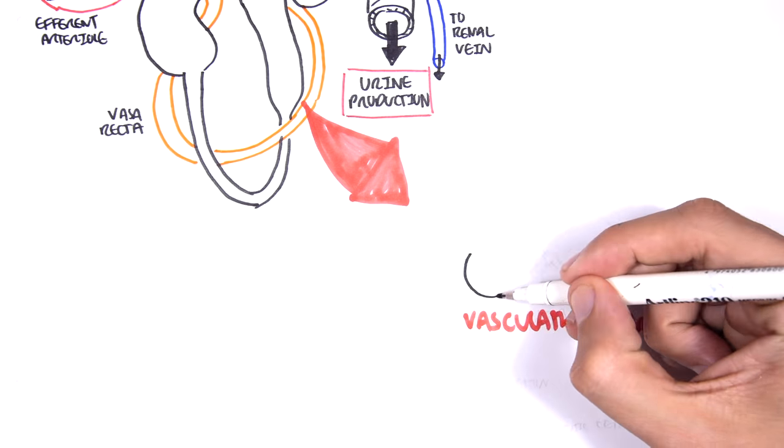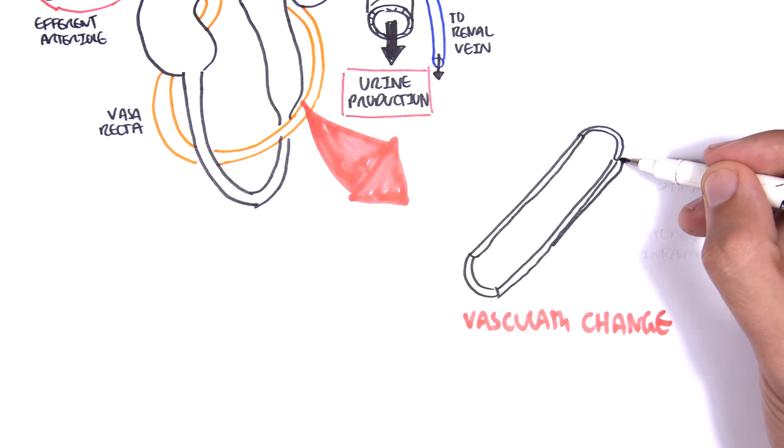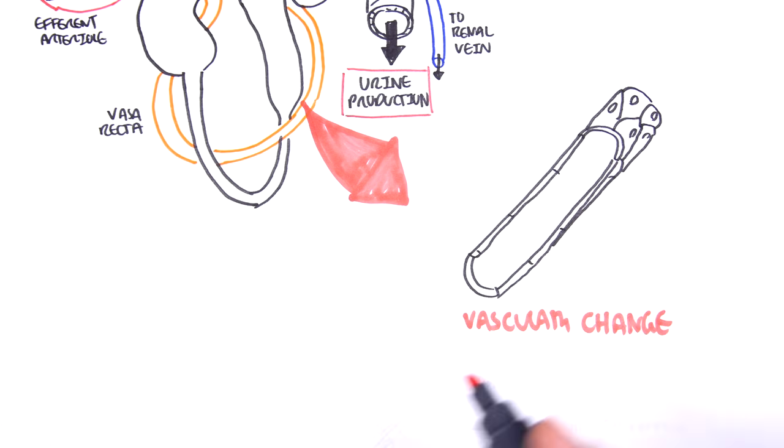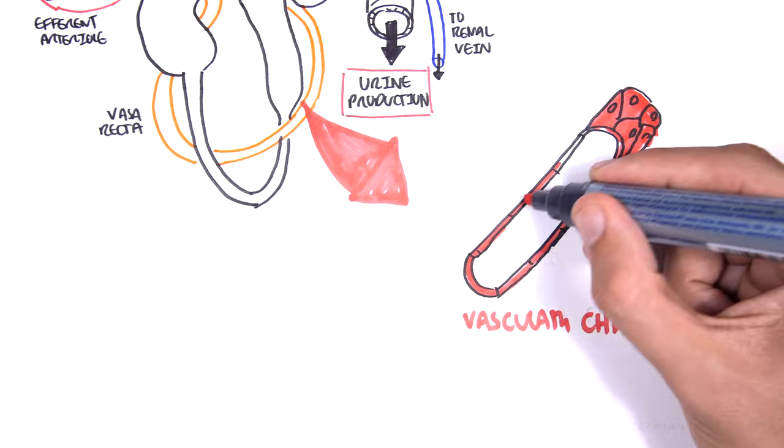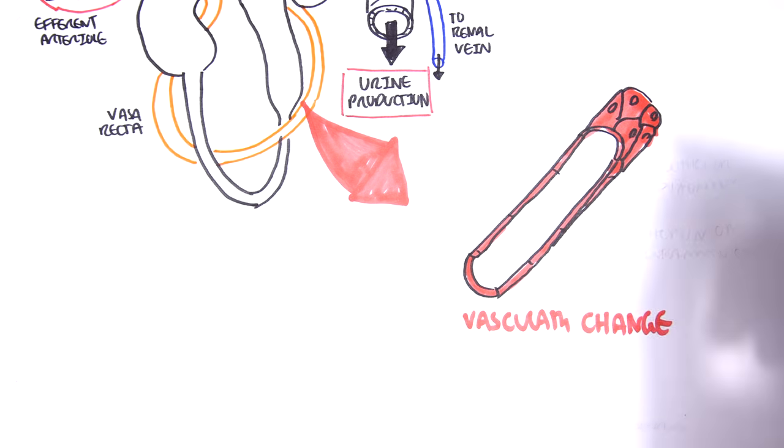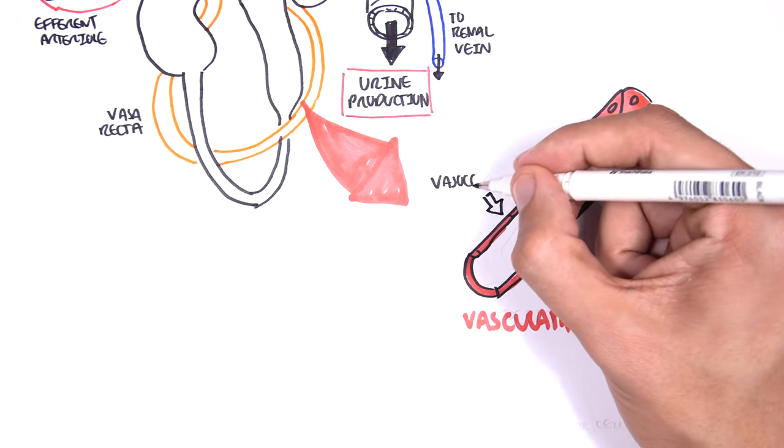The first is vascular change, where we see endothelial dysfunction, where we see vasoconstriction, particularly in the afferent arteriole, the arteriole coming into the nephron.